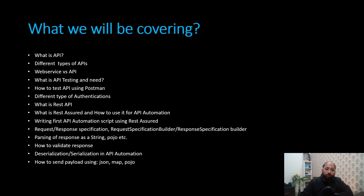We will understand deserialization and serialization in API automation with the help of Object Mapper. Finally, we will cover how to send a payload or body to a particular endpoint in the form of JSON, Map, or POJO. This is what we will be covering at a high level, with more topics to be added as we progress.